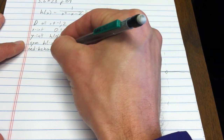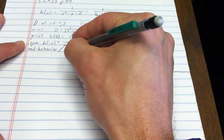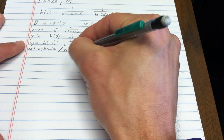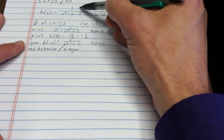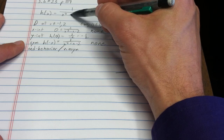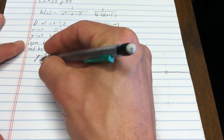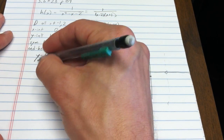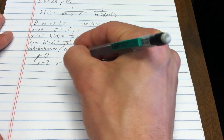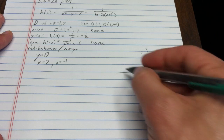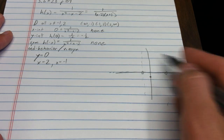After symmetry I look at end behavior: horizontal and vertical asymptotes. The degree of the numerator is 0 and the degree of the denominator is 2, so there is a horizontal asymptote at y = 0. There are vertical asymptotes at x = 2 and x = negative 1, so the function approaches those three lines.